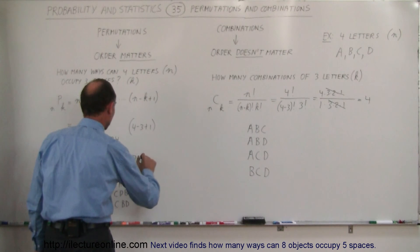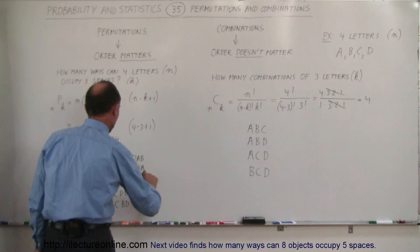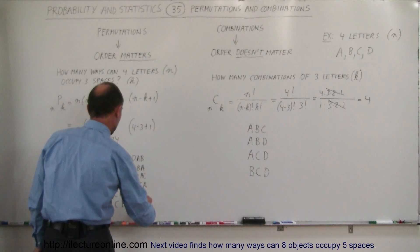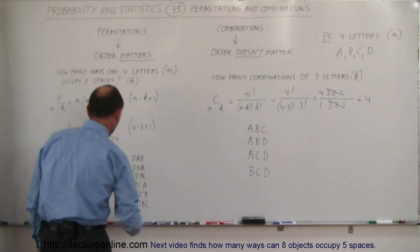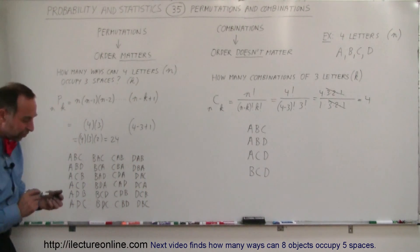Now we're going to have six more permutations, starting with the letter D. D, AB. D, B, A. D, how about AC, and D, C, A. Then we have D, C, B, and D, B, C. And there's all 24 permutations.